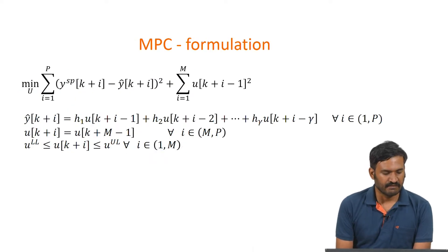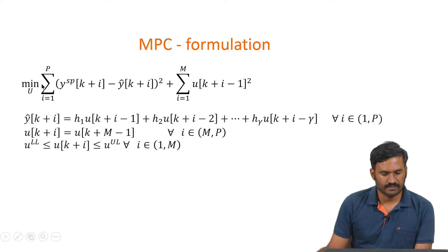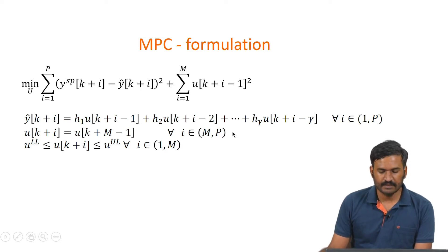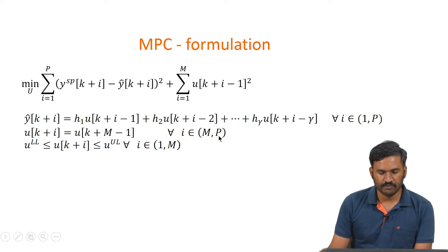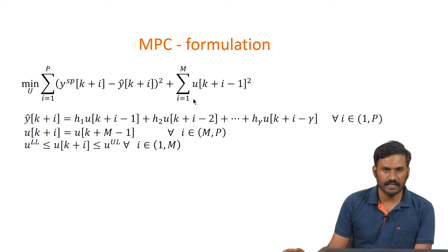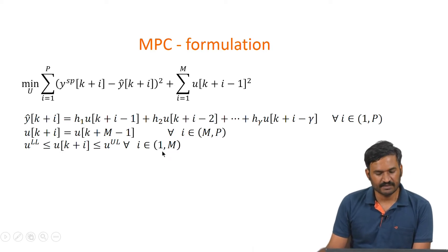The formulation minimizes the objective function where we have the summation of (Y setpoint minus Y-hat of K plus i) squared, and a minimum move objective added to the deviation from setpoint. Y-hat of K plus i is computed as a finite impulse response model with gamma coefficients. We have the constraint that U(K+i) equals U(K+M-1) where i runs from M to P, meaning we optimize only M elements out of the full prediction horizon. On top of that we have limit constraints on U for all time instances from 1 to M.